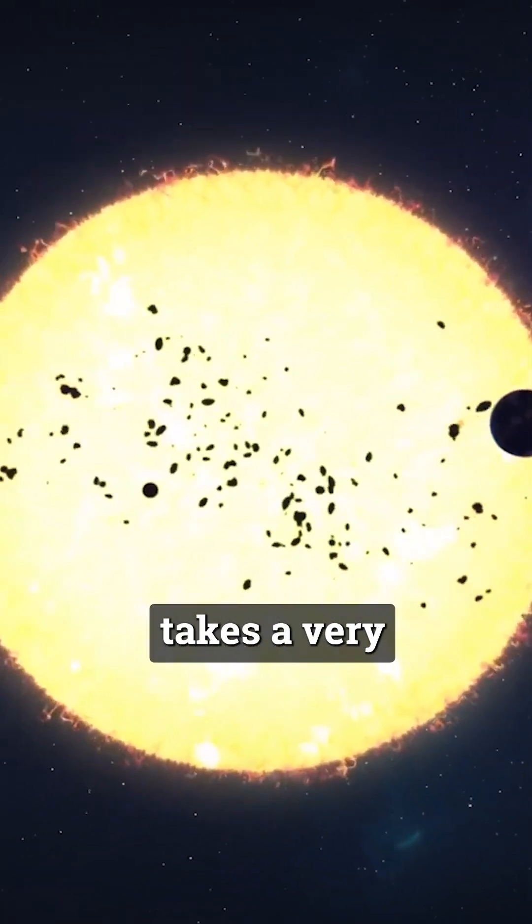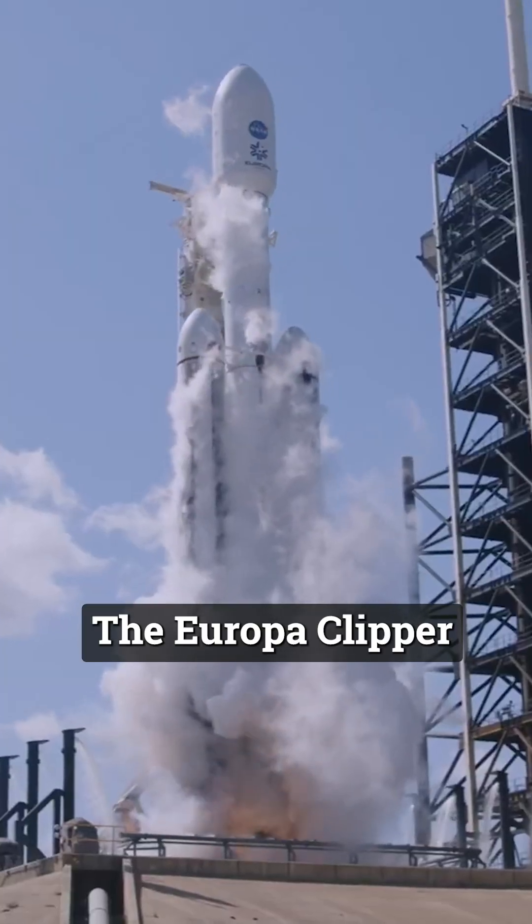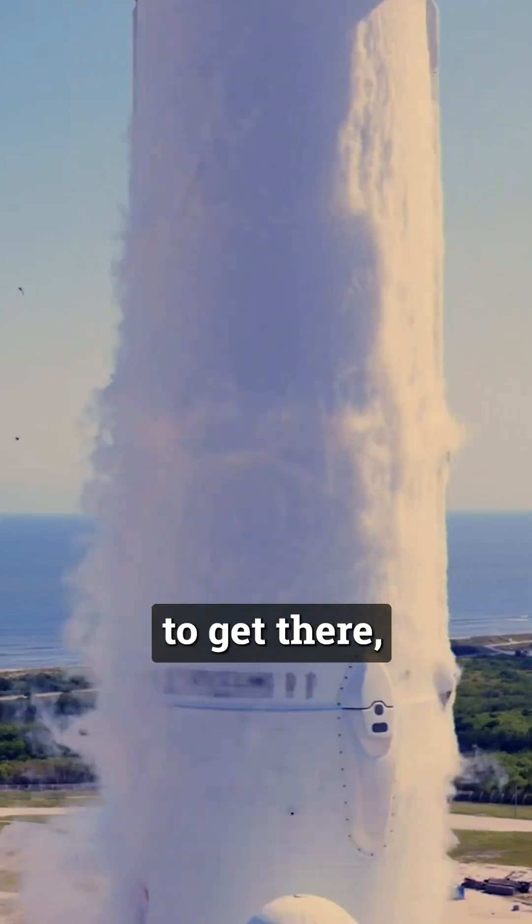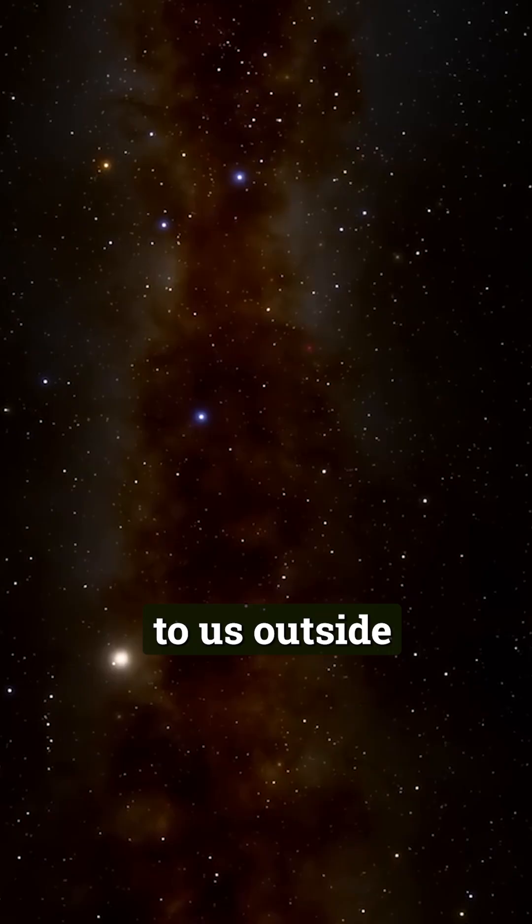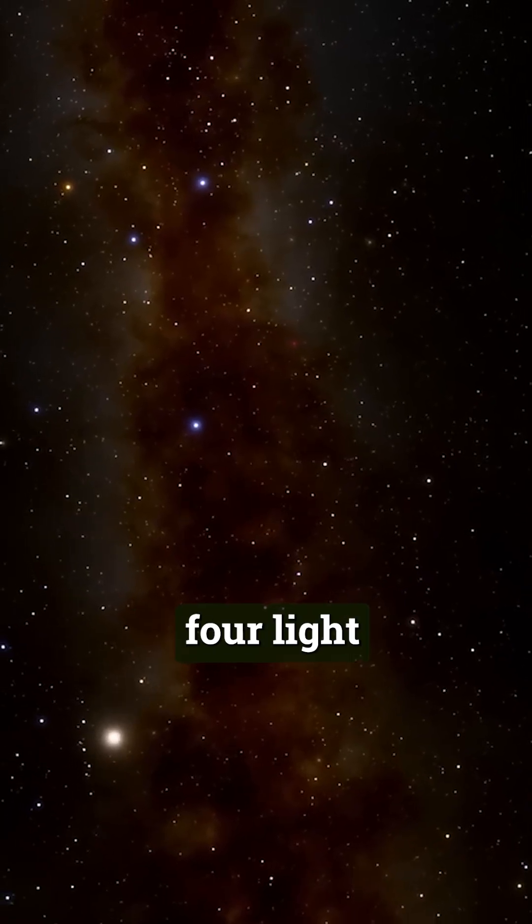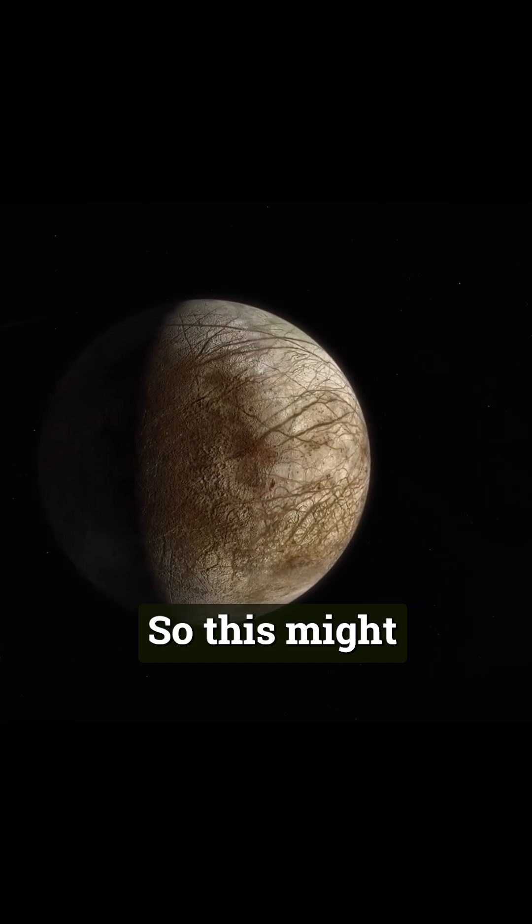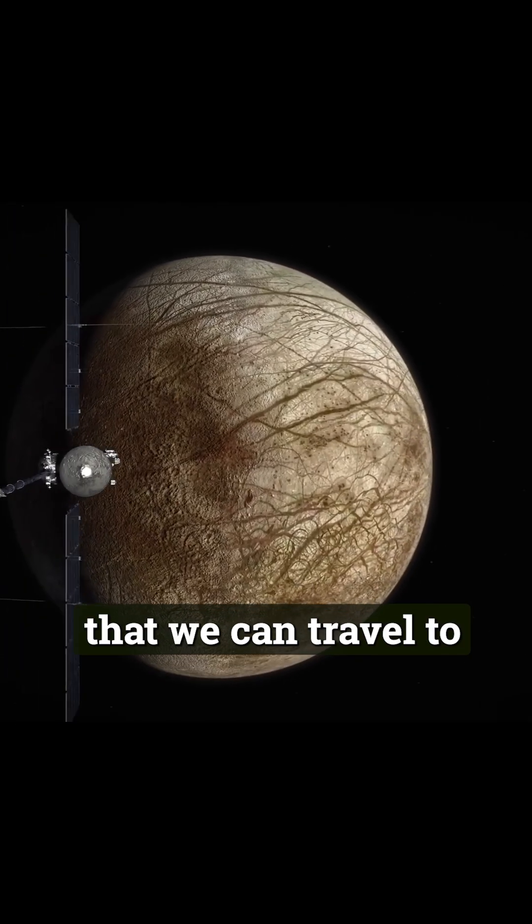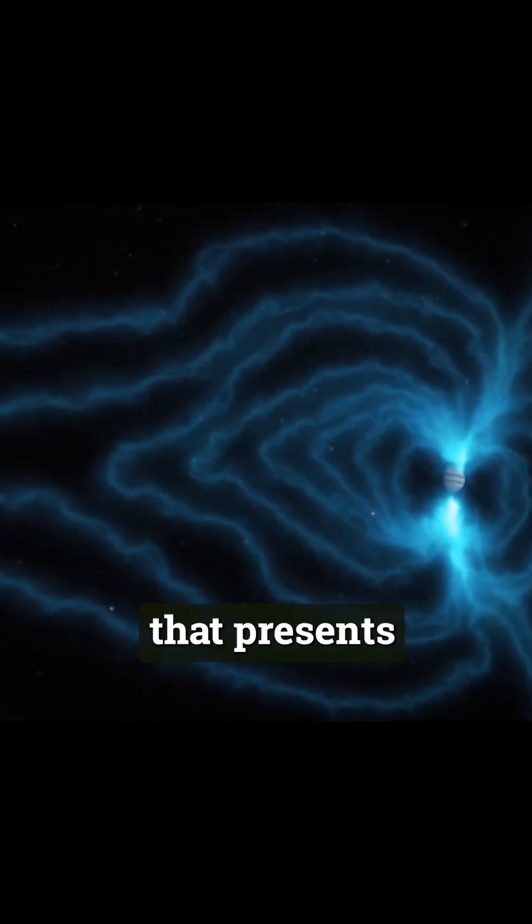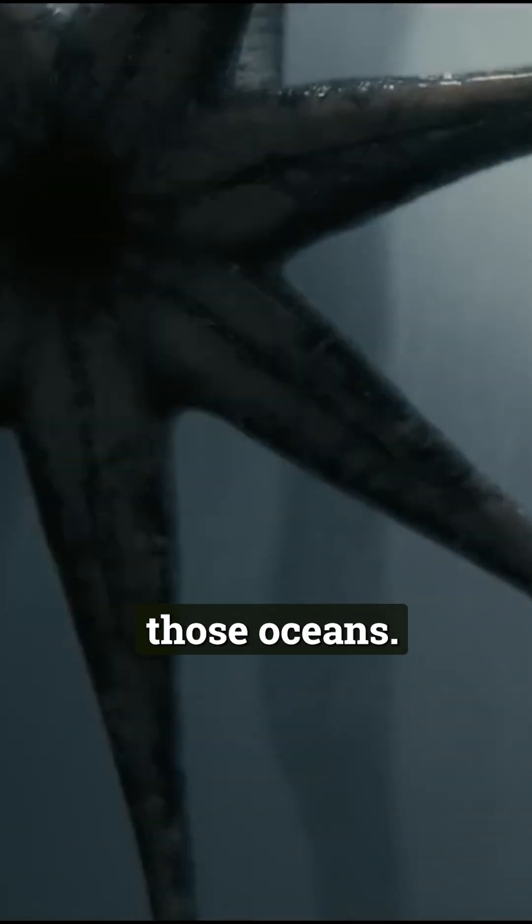But here's the shitty part. Getting to Jupiter takes a very long time. The Europa Clipper will take about five and a half years to get there. And the closest planet to us outside of our solar system is over four light years away, which would take an eternity to travel with our current technology. So this might very well be the only place that we can travel to within our lifetime that presents a possibility of life. Unless they come to us. Tell us what you think is in those oceans.